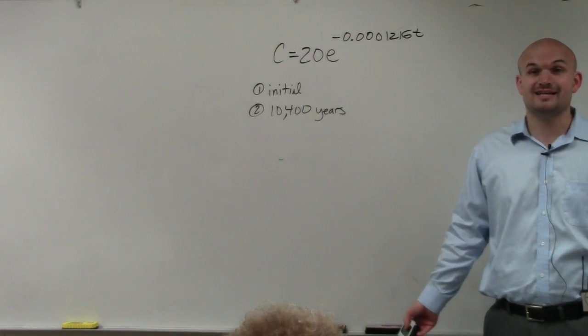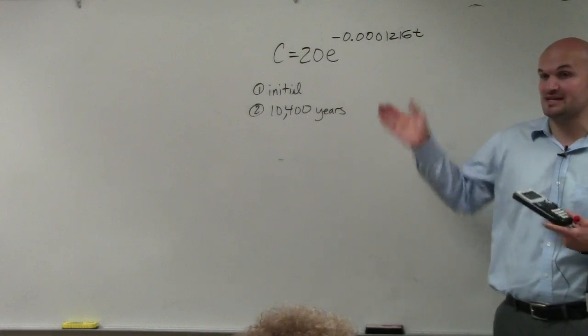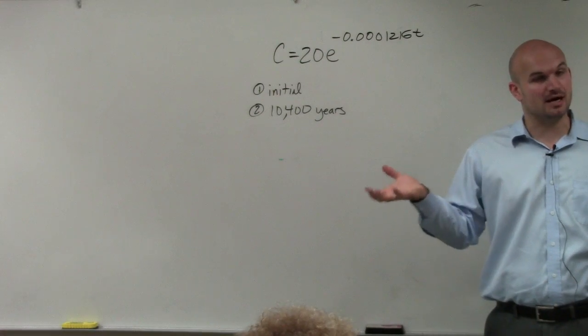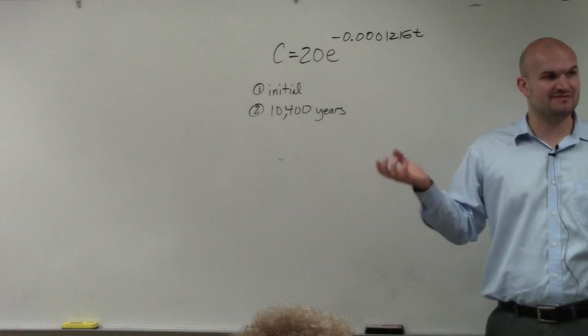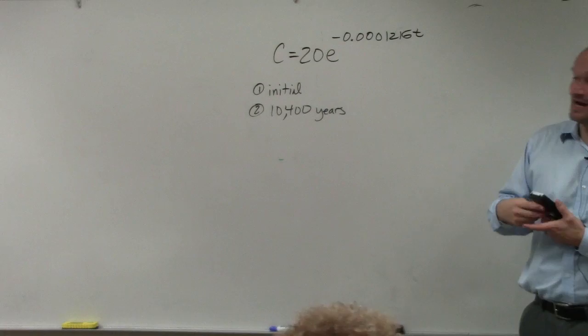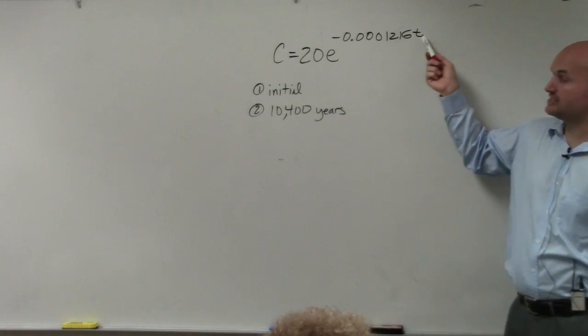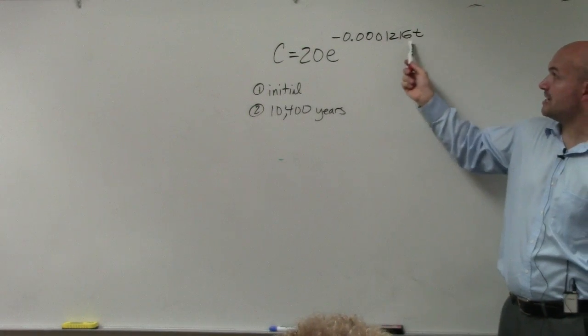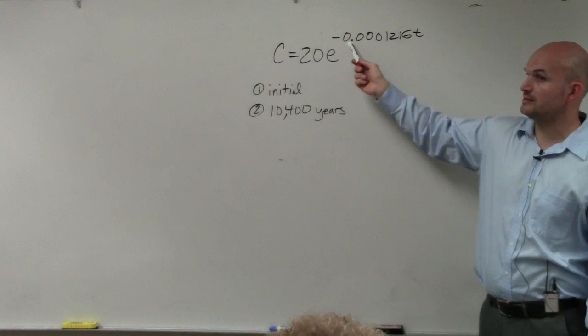So they first want to say, well, how much of this substance is in the initial amount? Remember, T represents time. So if we're talking about the initial amount, what value should we give T? Zero, right? To save a little bit of time, let's just think about this. If I put zero in for T, zero times this big number is going to be zero.